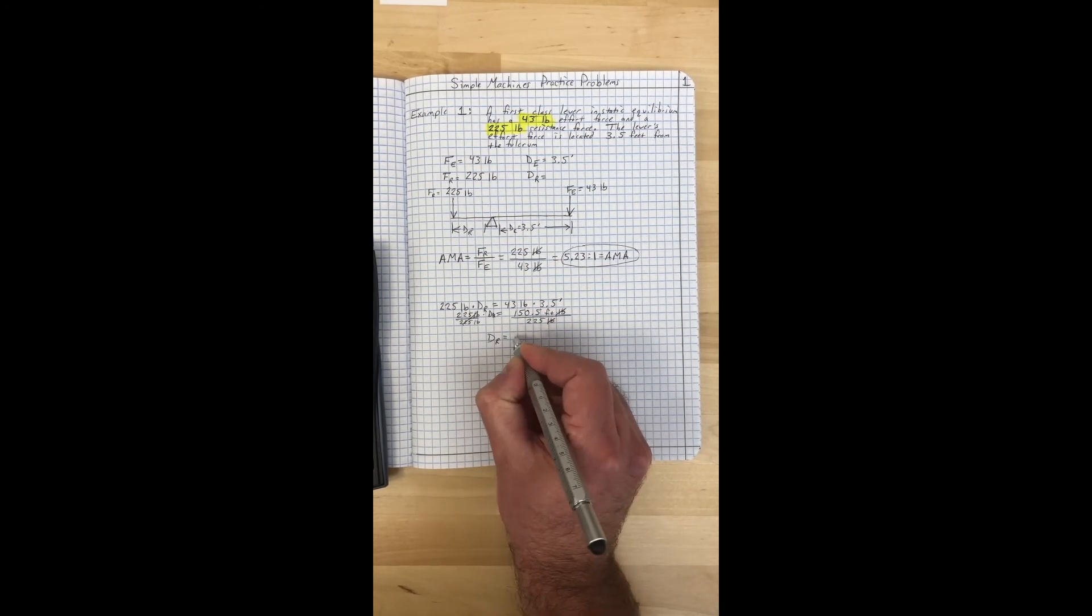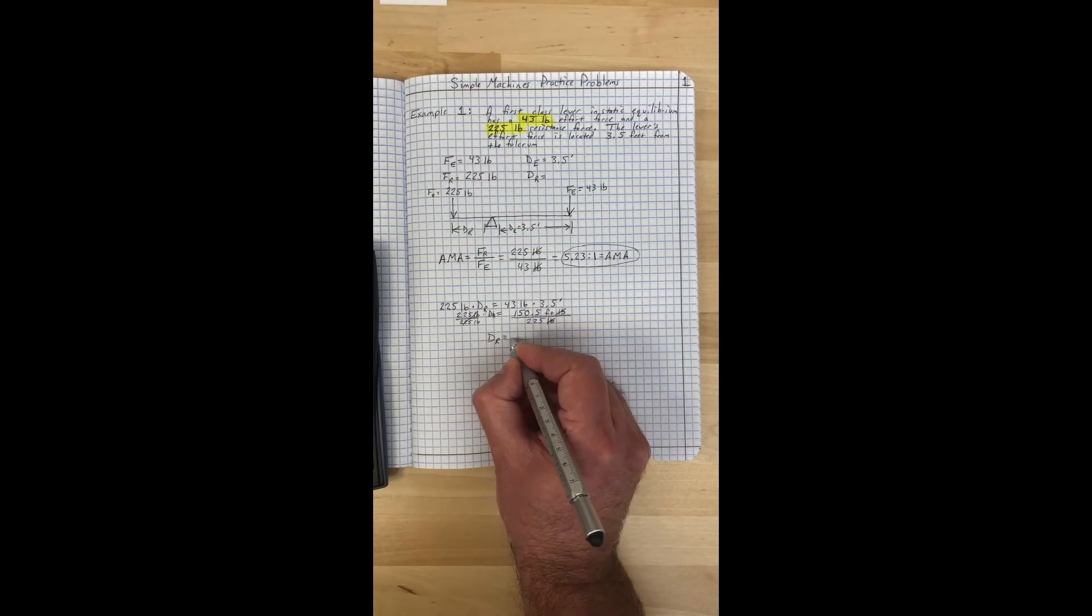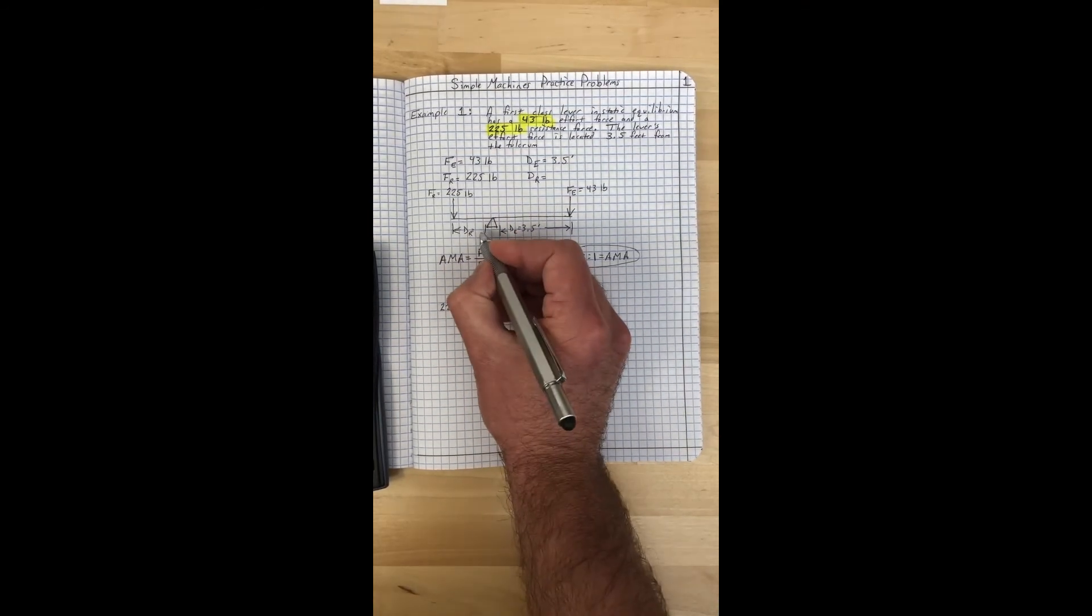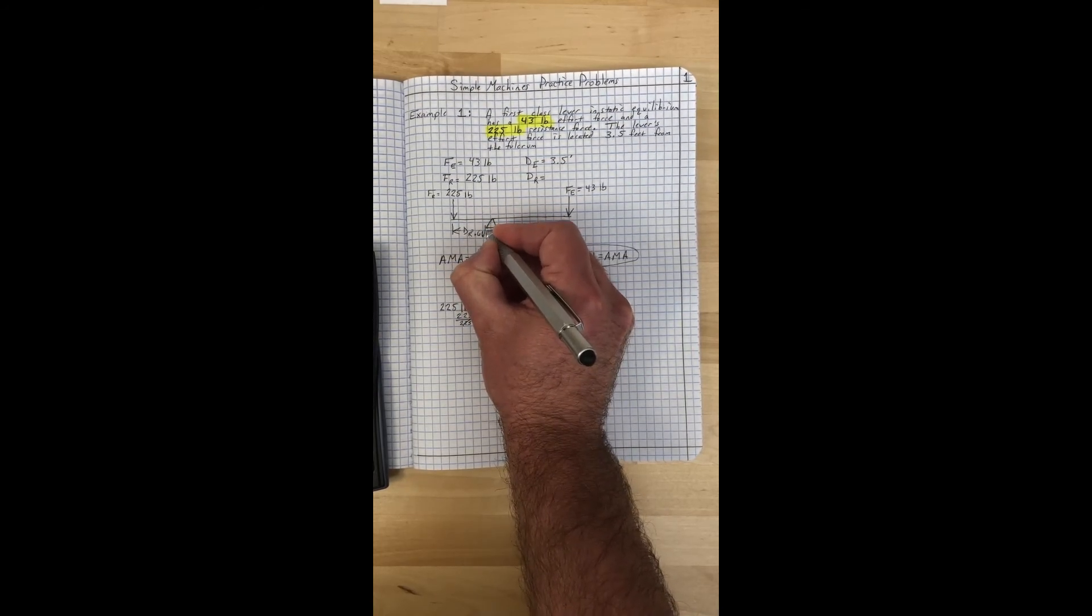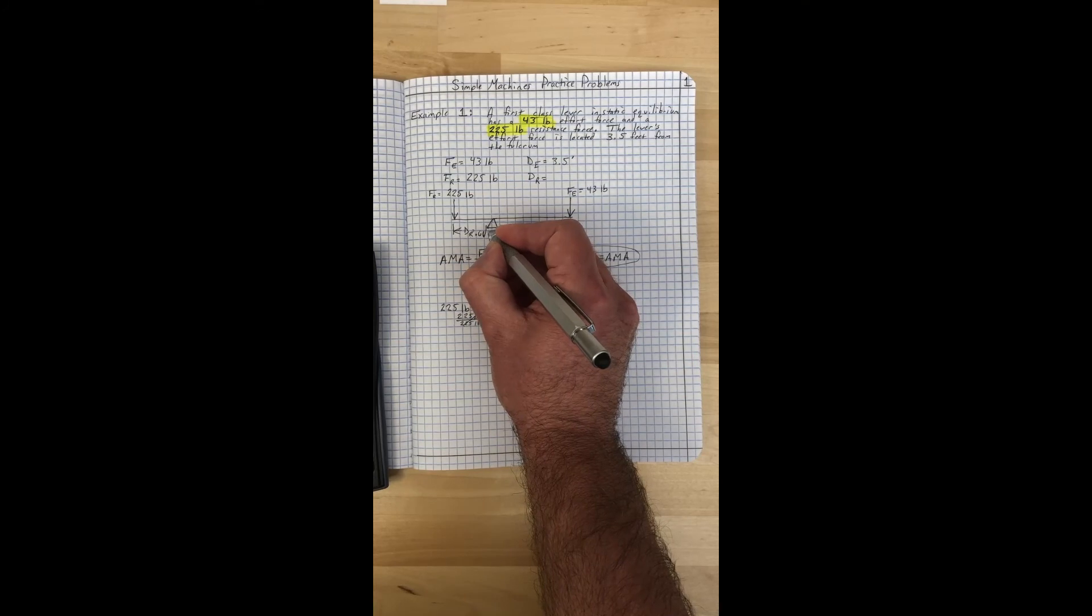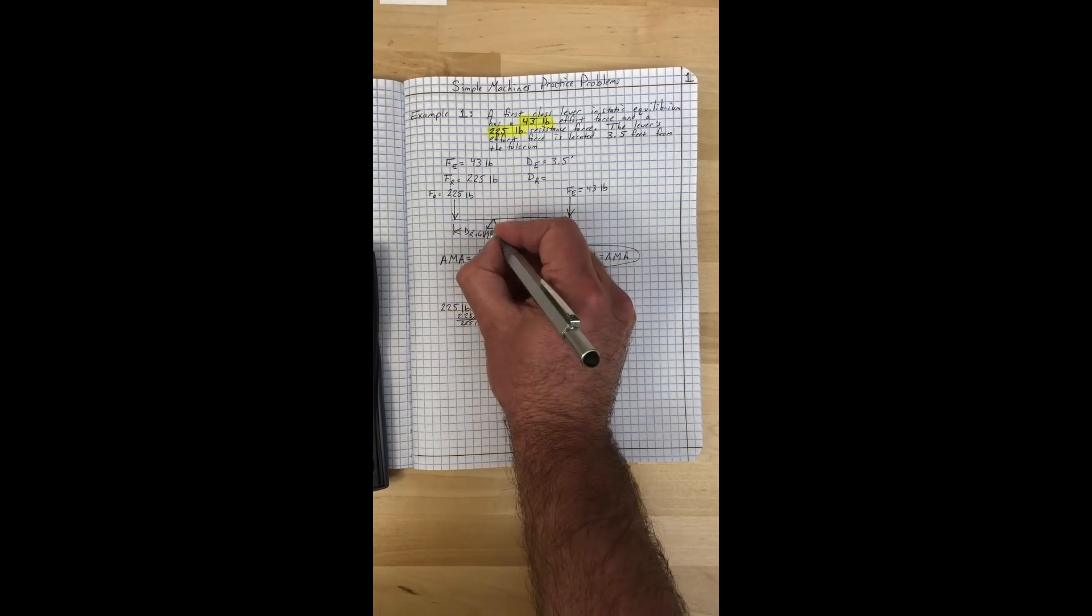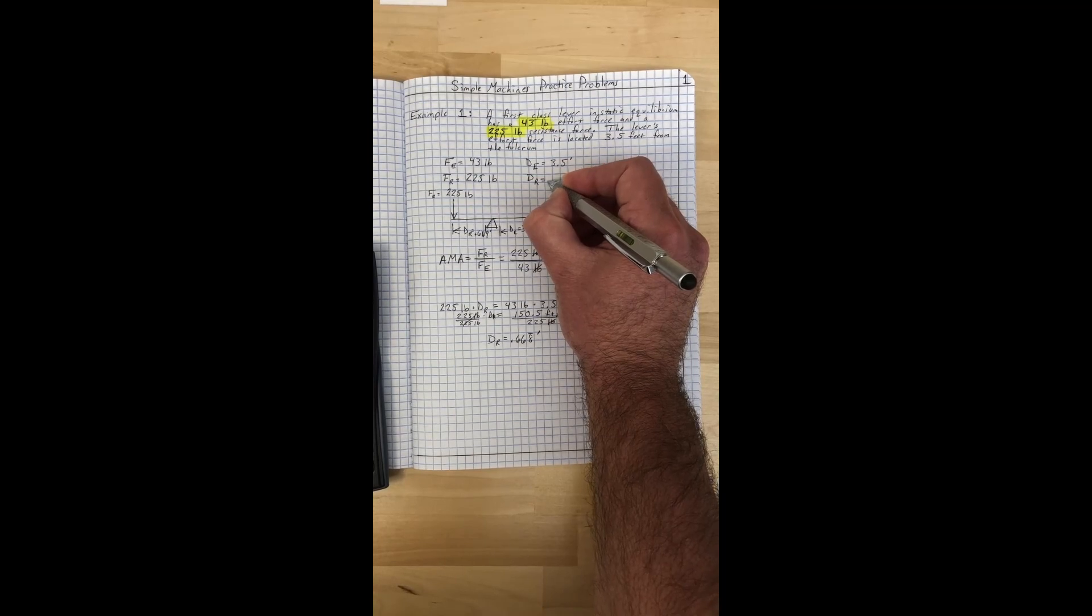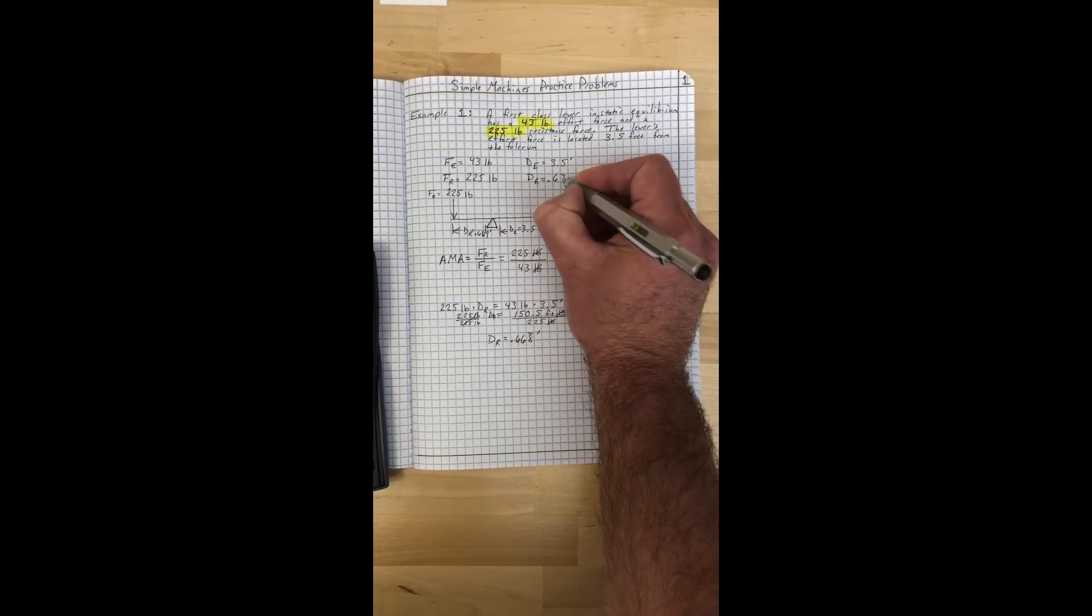We will add that into the drawing and we can round that to 0.669, or you could even make the argument for just saying 0.67 would also be fine. So I'll come up here and label that. Our resistance distance, which is what we were trying to come up with an answer for, is 0.67 feet.